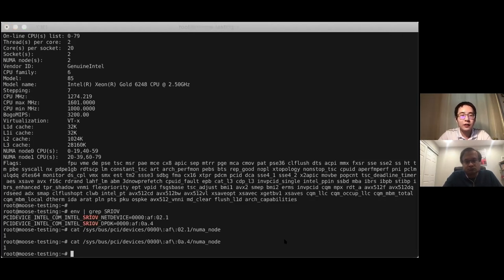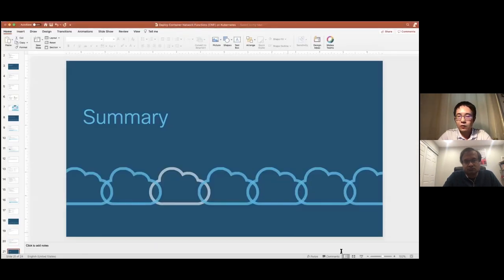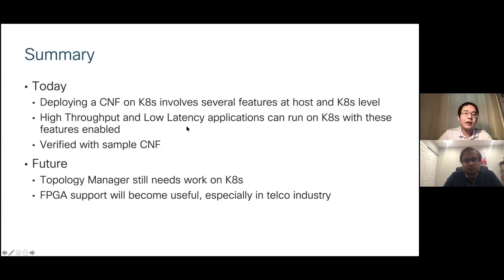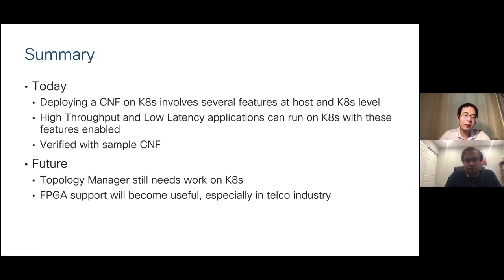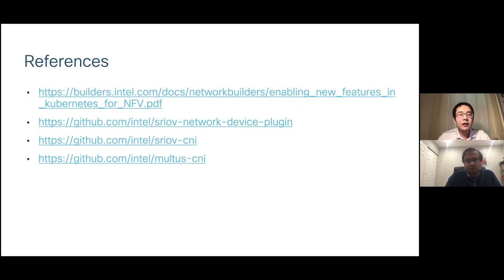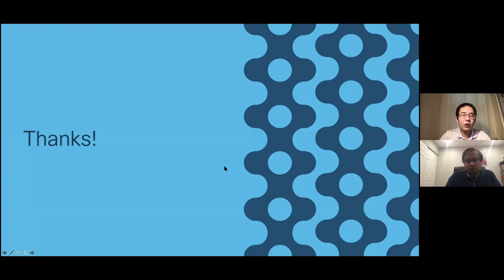In summary, today we covered features at both the host level and Kubernetes level: CPU isolation, huge pages, real-time kernel on the host, and CPU manager, topology manager, and SRIOV CNI plugins in Kubernetes. With all these features together, we demonstrated using VPP that you can run high throughput and low latency applications. For future work, topology manager still doesn't support huge pages — that needs to be addressed for better performance. FPGA support is also believed to be very useful especially for telecom 4G and 5G workloads. Thanks for listening and welcome to ask questions.